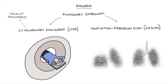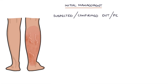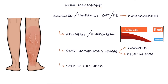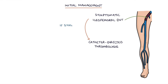A CTPA is usually the preferred investigation unless the patient has significant kidney impairment or a contrast allergy. The initial management for a suspected or confirmed DVT or PE is with anticoagulation. In most patients, the NICE guidelines from 2020 recommend treatment dose apixaban or rivaroxaban. This should be started immediately where a DVT or PE is suspected and there's a delay in getting the scan — the treatment can then be stopped if the scan excludes a DVT or PE. The NICE guidelines also recommend considering catheter-directed thrombolysis in patients with a symptomatic iliofemoral DVT and symptoms lasting less than 14 days, involving inserting a catheter under x-ray guidance to apply thrombolysis directly into the clot.